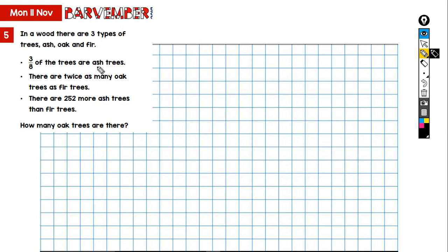Okay, three-eighths of the trees are ash trees. Well, that's interesting. Because what that also tells us is that five-eighths of the trees are made up of oak and fir. Okay, so that's equivalent to five-eighths. Okay, and how's this going to help us?